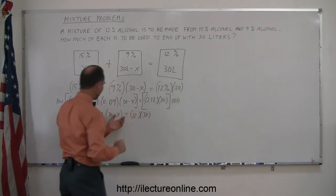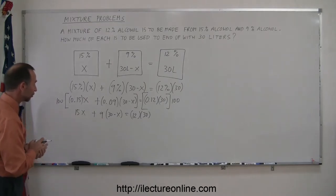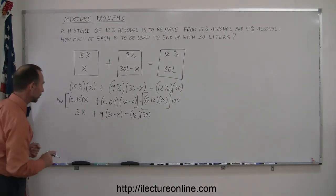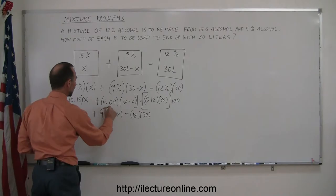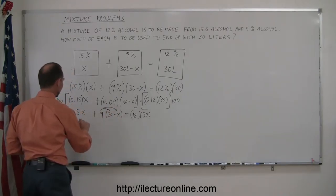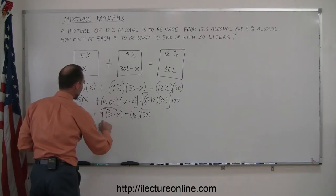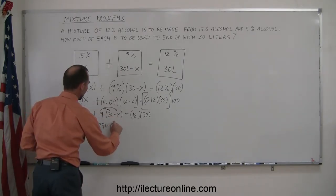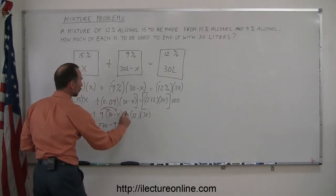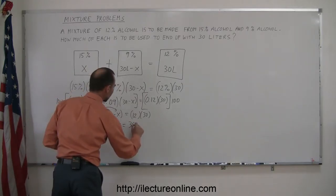Now all we have left to do here before we can go ahead and finally solve that equation is get rid of the parentheses. So we multiply the 9 times both the 30 and the x. So we get 15x plus 9 times 30 is 270. 9 times a minus x is a minus 9x equals 12 times 30 is 360.